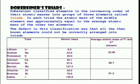Dobereiner's Triads. In the year 1817, John Wolfgang Dobereiner, a German chemist, tried to arrange elements with similar properties into groups. He identified some groups having three elements each, so he called these groups Triads. When the three elements in a Triad were written in order of increasing atomic masses, the atomic mass of the middle element was roughly the average of the atomic masses of the other two elements.